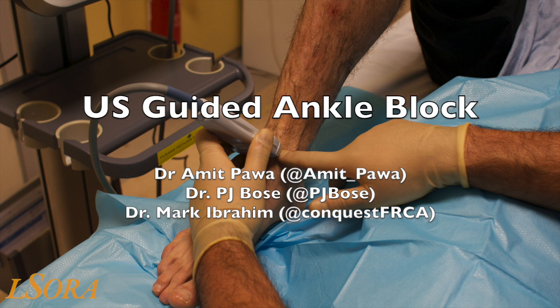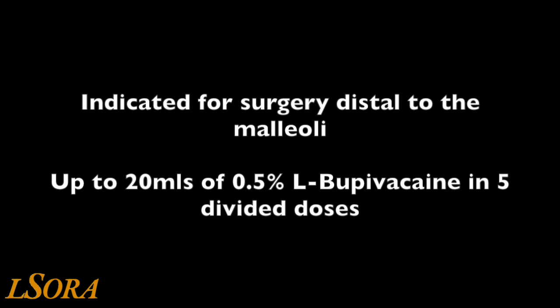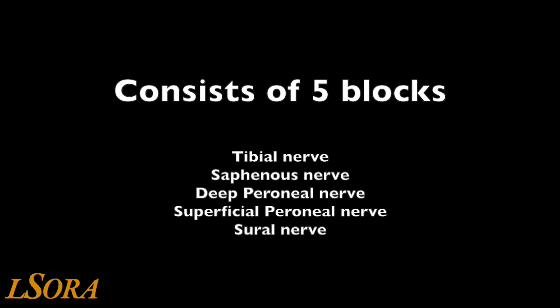In this video, we will show you how to scan and the sonic anatomy required to perform an ultrasound-guided ankle block. This block is indicated for forefoot surgery and surgery distal to the malleoli. The dose of local anaesthetic required is normally up to 20 mL of 0.5% levobupivacaine in 5 divided doses. A complete ankle block consists of 5 blocks: the tibial nerve, saphenous nerve, deep and superficial peroneal nerve, and the sural nerve.